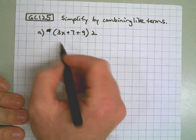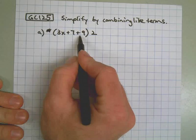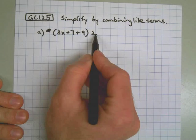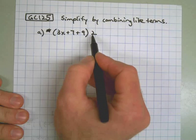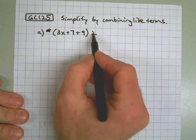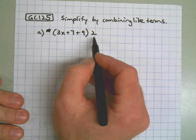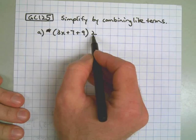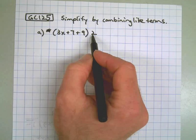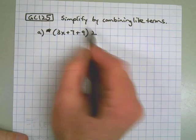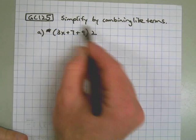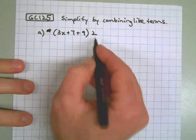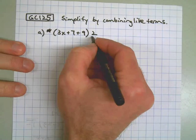Part A: 3x plus 7 plus 9 times 2. Some people get confused when the factor, or the number outside the parentheses, is on the right side. I just wanted to let you know that it's okay — it doesn't matter which side it's on. You're still just going to distribute and multiply it by each thing.